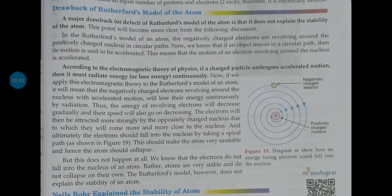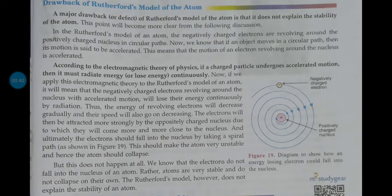Good morning to you all. Today I am going to explain the drawbacks of Rutherford's model of atom. Rutherford's model of atom has some limitations. According to Rutherford, electrons revolve around the positive nucleus in circular paths at very high speed.